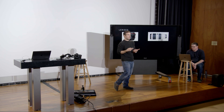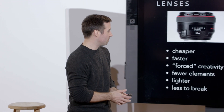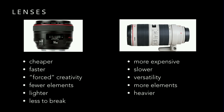Prime lenses are physically lighter, easier to carry around, and tend to be cheaper because the construction is simpler. I also like to highlight 'forced creativity' — with a zoom lens people tend to stand in one place and zoom in or out. With a prime, you actually have to get closer or farther from your subject, which challenges you to build a more interesting frame. There's also less to break and it's cheaper to replace. Zoom lenses are slower in terms of light, more expensive, but give you versatility — great for events or when you don't want to carry multiple lenses.